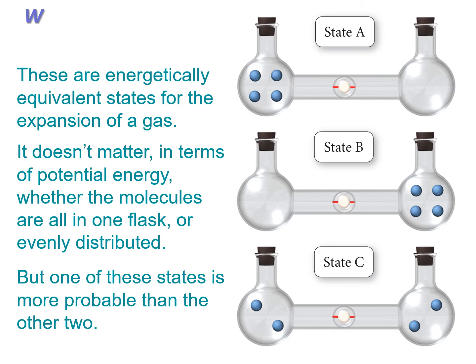Now let's look at what W is. W is the number of states at the same energy level that a system can have. Here we have a gas expanding in special glassware with a valve that we can open to allow gas particles to travel to the other side, or close to keep them on one side.